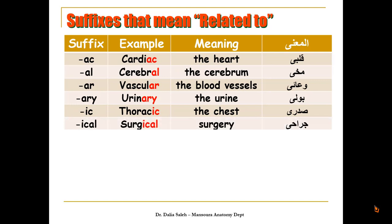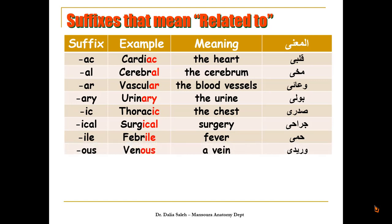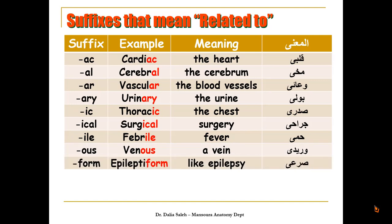'Surgical,' related to surgery — you add '-ical.' 'Febrile,' meaning fever or something feverish — you add '-ile.' 'Venous,' something related to a vein — you add '-ous.' 'Epileptiform,' a condition resembling epilepsy — you add '-form' at the end. 'Mucoid,' something which looks like mucus — you add '-oid.'